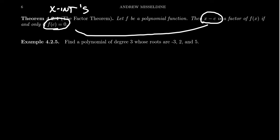Well, by the factor theorem, if negative 3 is a root, that means that x minus negative 3 was a factor of the polynomial. If 2 is a root, that means that x minus 2 was a factor of the polynomial. And if 5 is a root, that means that x minus 5 is a factor of the polynomial. And so this is our polynomial f of x.